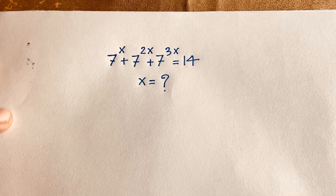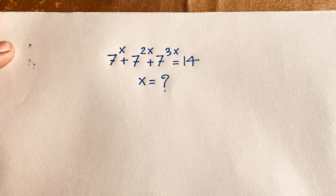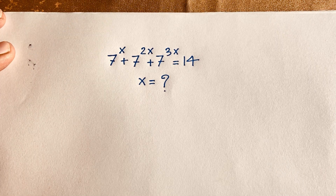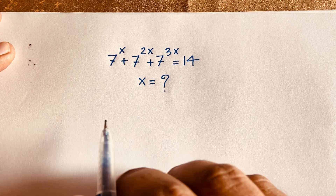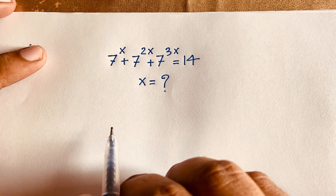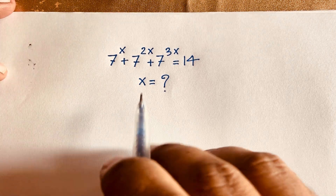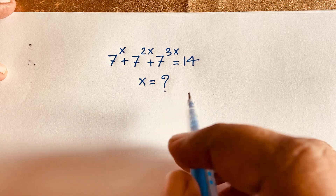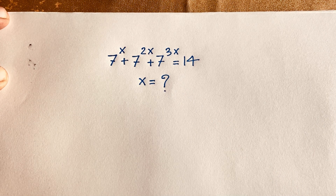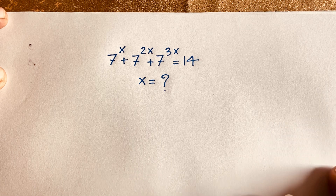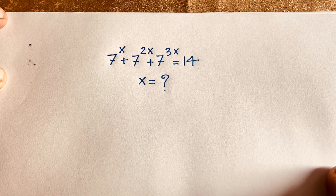Hello everyone. In this video, we are going to solve this interesting Math Olympiad question. The question is: 7 to the power x plus 7 to the power 2x plus 7 to the power 3x is equal to 14. We are to find out what is the value of x in this exponential Math Olympiad question.